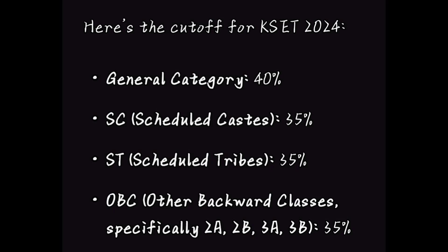If you belong to the general category, you must secure 40% or beyond. This is the highlight of the video — you must understand this. Even though you are getting 40% or 35%, it still depends on the cut off. It depends on the number of candidates who appeared in both exams and who scored the highest. The cut off list comes out on that basis. Getting 40% or 35% does not mean that you are automatically qualifying the KSET exam. Your result depends on the cut off.